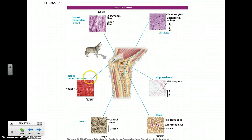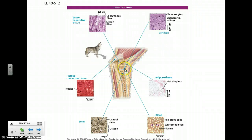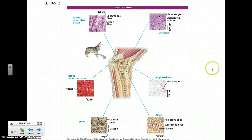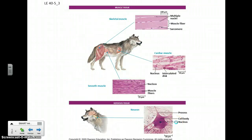Then you have fibrous connective tissue, which is also largely made of collagen. It's the stuff of ligaments and tendons — tendons hold muscle to bone, and ligaments hold bones to bone, keeping joints together. Bone itself is a type of connective tissue, as is the blood that comes from bone. Adipose tissue, or fat, is connective tissue that forms padding for our body and is also where we store energy. Cartilage is found between bones — essentially the padding between them.